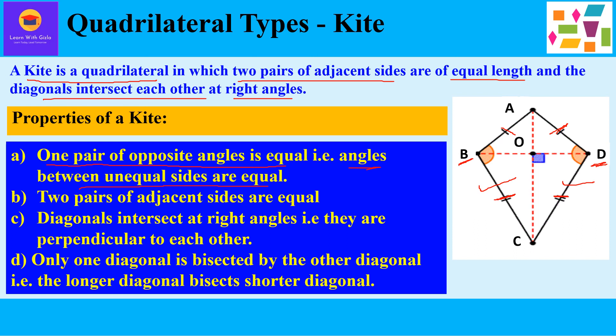The second property is that two pairs of adjacent sides are equal — this was already given in the question, that both pairs of adjacent sides are equal to each other. The third property is that the diagonals intersect at right angles, meaning they are perpendicular to each other. This was derived from the third part, where we proved that AC is perpendicular to BD, forming 90 degrees.